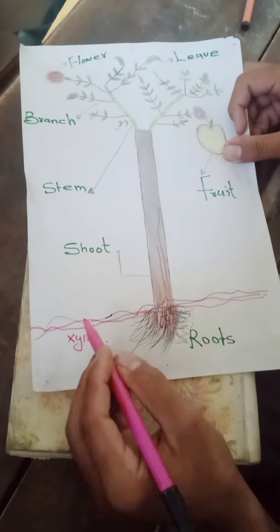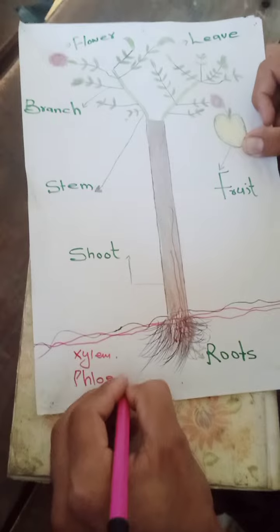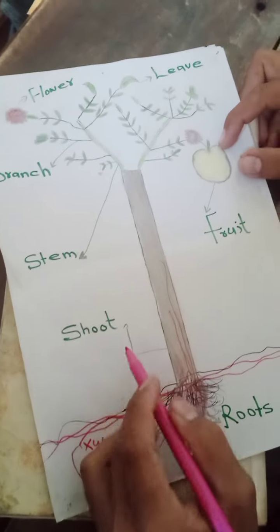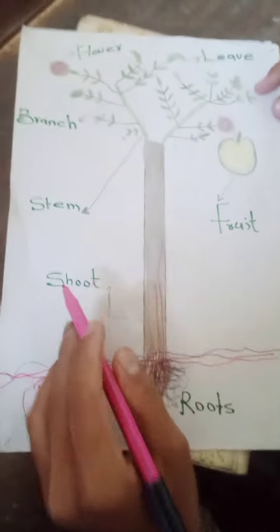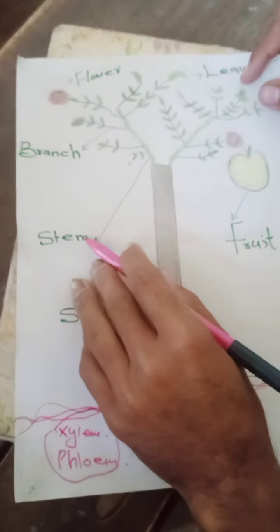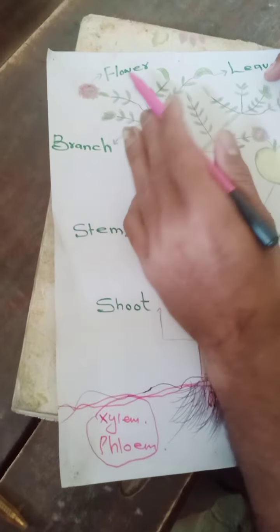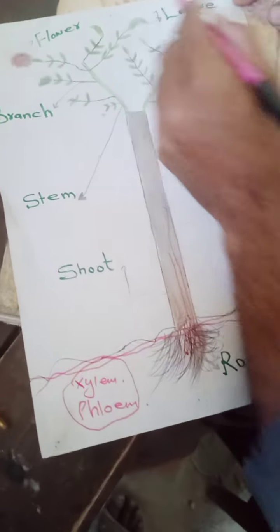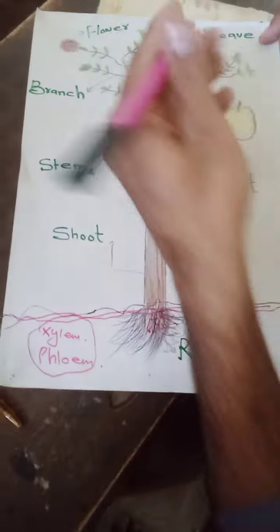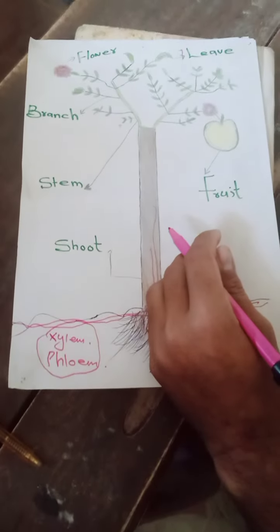The tubes that carry food in the plants are called phloem.